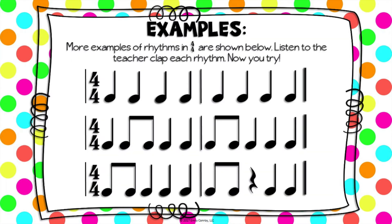So let's take a look at some examples of rhythms written in four-four time. We can tell they're all written in four-four time because there's that four over four at the beginning of each measure. I'm gonna clap each rhythm and you're gonna clap it right after me. So first I'll do the top one — one and two and here I clap.